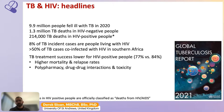Rates are much higher in parts of Southern Africa. HIV treatment success, despite advances, remains lower for people also living with HIV, partly due to higher mortality and higher relapse rates when managing the two diseases simultaneously, but also due to polypharmacy, drug-drug interactions, and toxicity associated with the higher pill and medication burden of co-infection.